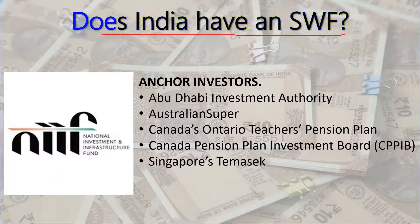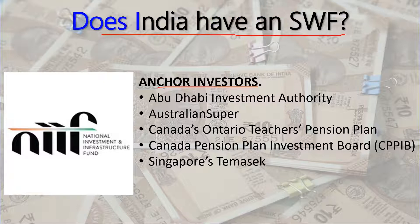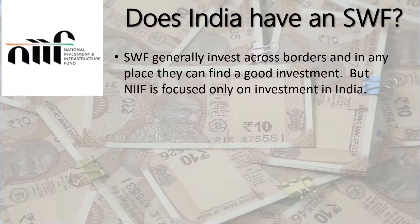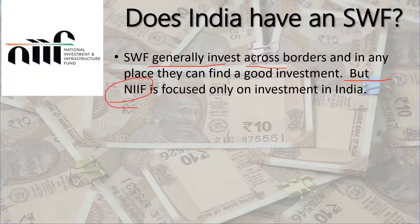Now let's talk about whether India has an SWF or not. In 2015, the Government of India created a fund called NIIF, or National Investment and Infrastructure Fund, with an initial seed of 3 billion US dollars. Additional money was provided by anchor investors including Abu Dhabi Investment Authority, AustralianSuper, Canada's Ontario Teachers' Pension Plan, Canada's CPPIB, and Singapore's Temasek. Unlike typical SWFs that invest across borders, India's NIIF is focused only on investment within India — somewhat similar to Russia's RDIF (Russian Direct Investment Fund), which also invests exclusively in Russia.